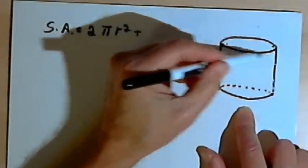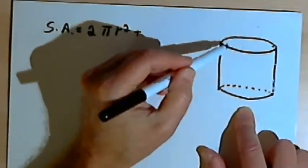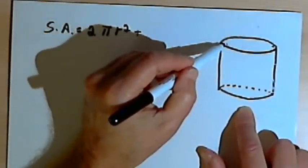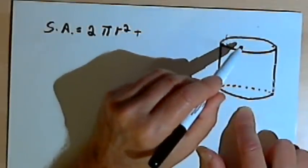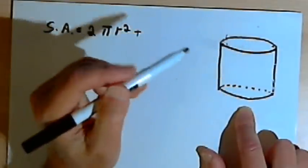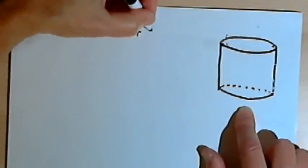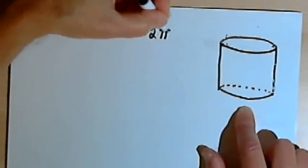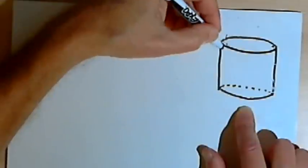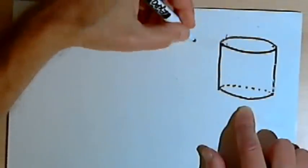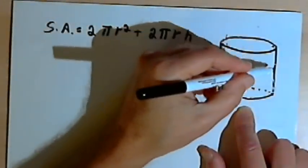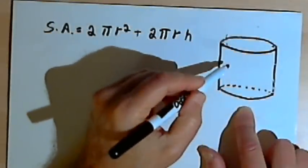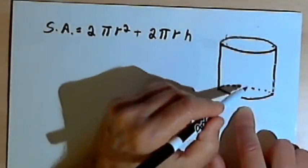Plus the length of that rectangular piece of paper. Now the length is actually just the circumference of the cylinder. I have a formula for circumference. Circumference is 2 pi r. So I want to take the circumference, 2 pi r, and multiply it by the height of the cylinder. And that would give me the side area, the vertical area, of the cylinder.